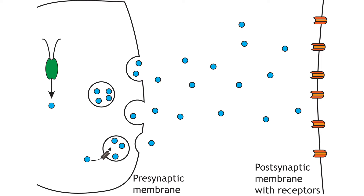Neuropeptides are synthesized in the cell body and must be transported to the terminal, which can lead to slower release. Additionally, a neuron will typically synthesize and release only one type of small molecule neurotransmitter, but can synthesize and release more than one neuropeptide.